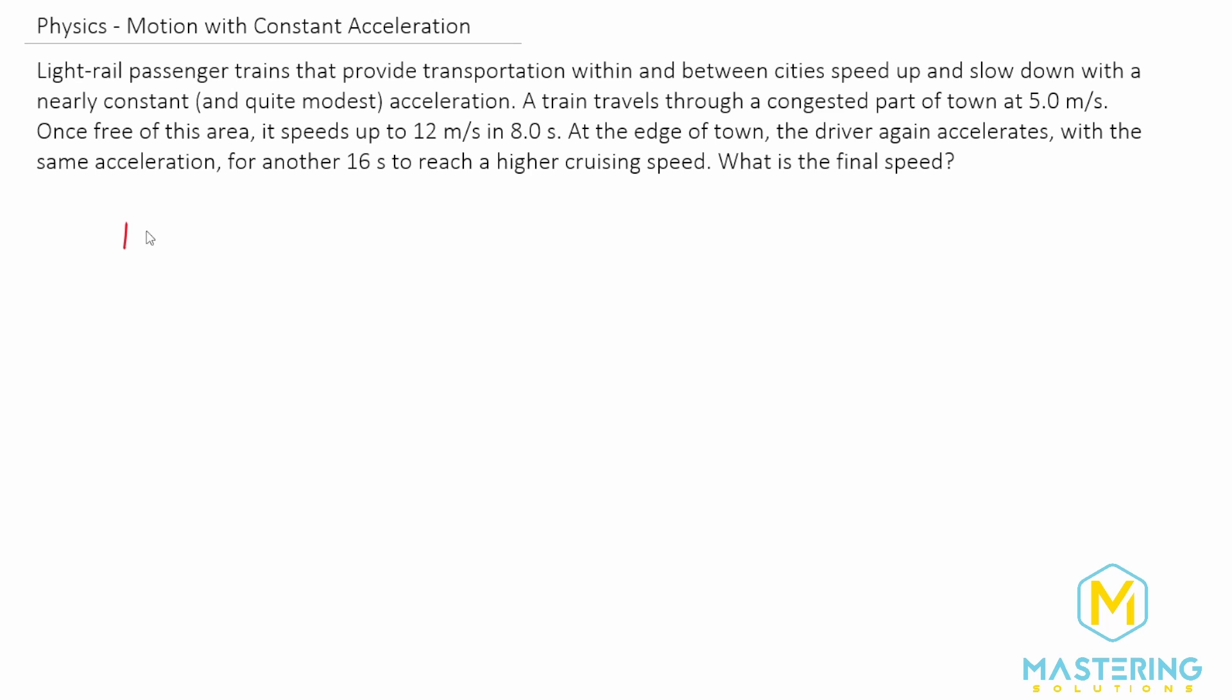So first the train is going through a section of town. It's a congested part of town, and it's traveling at a constant speed of 5 meters per second. Since it's traveling at that same speed through this whole section, that means acceleration is 0. And this is the velocity.